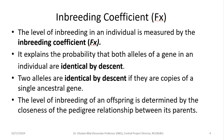The inbreeding coefficient Fx measures the level of inbreeding in an individual. It explains the probability that both alleles of a gene in an individual are identical by descent. Two alleles are identical by descent if they are copies of a single ancestral gene — both copies coming from the same ancestor. The level of inbreeding of an offspring is determined by the closeness of the pedigree relationship between its parents.